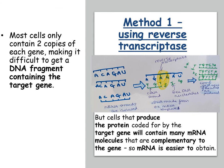The first method is using reverse transcriptase. Most cells only contain two copies of a gene, which makes it difficult to get a DNA fragment containing the target gene. But cells that produce the protein coded for by that target gene will have many mRNA molecules that are complementary to the gene, so mRNA is easier to obtain.